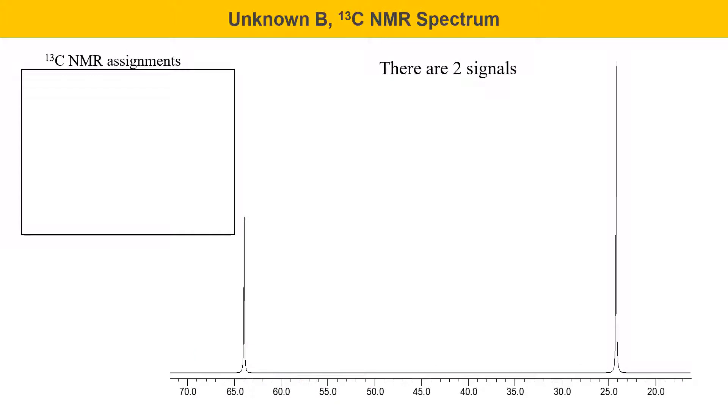The carbon-13 NMR spectrum for unknown B is shown here. There are only 2 signals. Now, this is interesting because this molecule, I will tell you, has 3 carbons. The reason there's only 2 signals is that there's some symmetry in this molecule, and that some of the carbons are the same. There's an internal mirror plane of symmetry in this molecule that makes 2 of the carbons the same. That's something to watch for in some of these spectra. Unknowns B through H contain a few high symmetry molecules that have some nuclei that are the same and give the same signal.